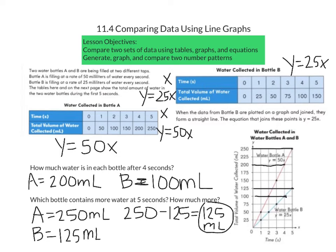If we were to ask ourselves if at any time do the bottles contain the same amount of water, we would want to take a look and see if there are any spots in our graph where the two graphs overlap each other. The only spot where the two graphs overlap would be at zero mL in zero seconds. At each time, the amount of water in bottle A would be twice as much as the amount of water in bottle B, which we can gather from both our graph and our tables.